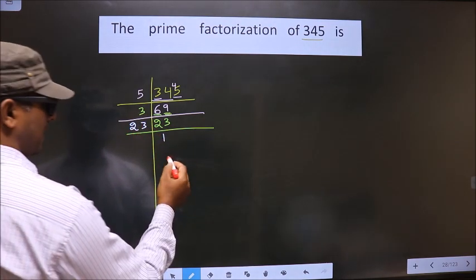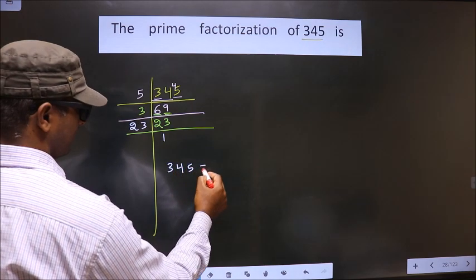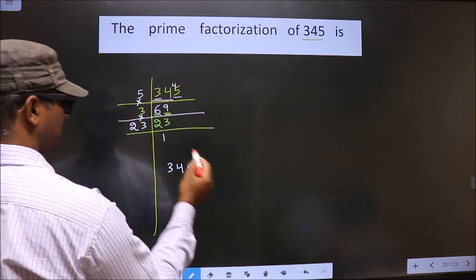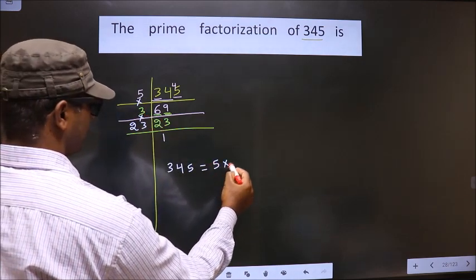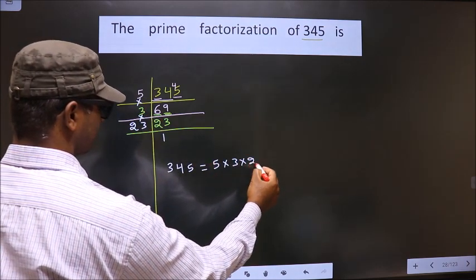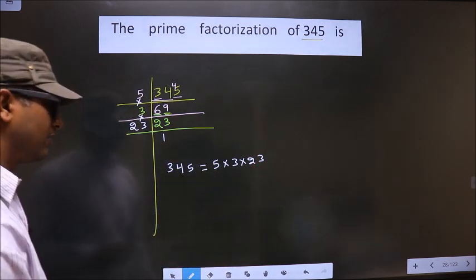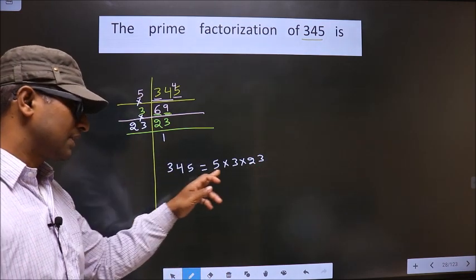So, prime factorization of 345 is - you put the multiplication symbol between them - that is 5×3×23. So this is the prime factorization of 345.